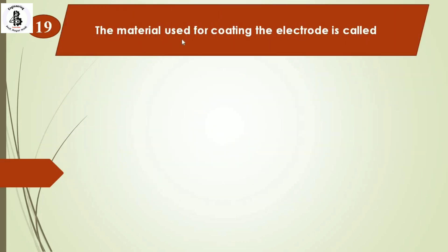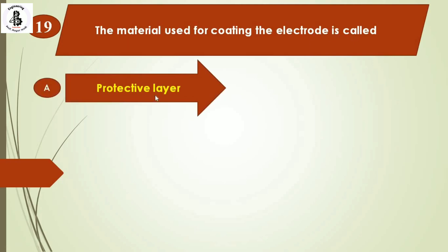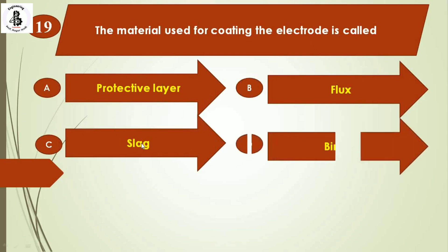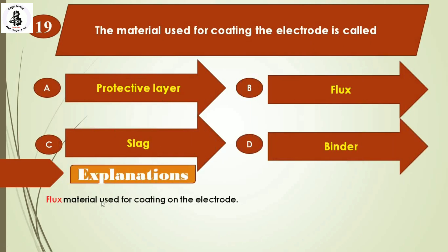The next question: the material used for coating the electrode is called — Option A: protective layer, Option B: flux, Option C: slag, Option D: binders. Flux is the material used for coating the electrode. When the flux melts, it generates slag. So flux is the coating material, and the right answer is Option B.